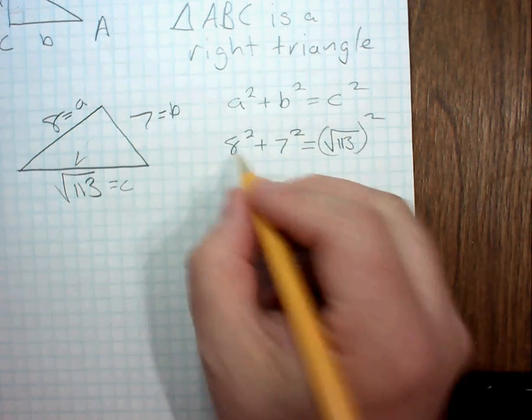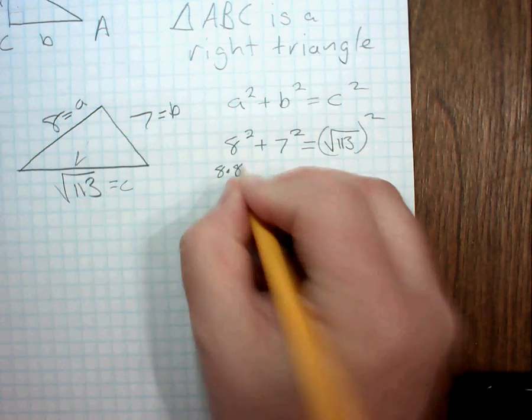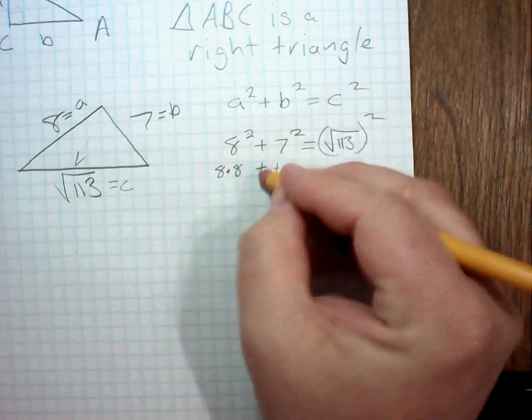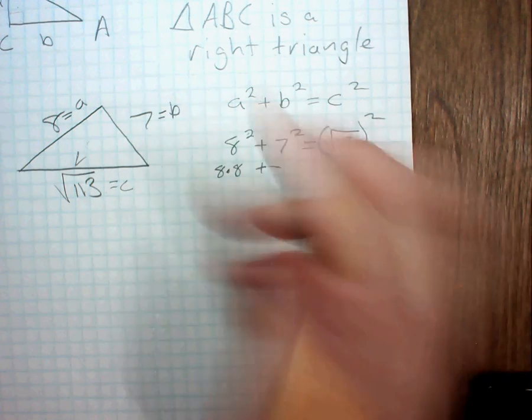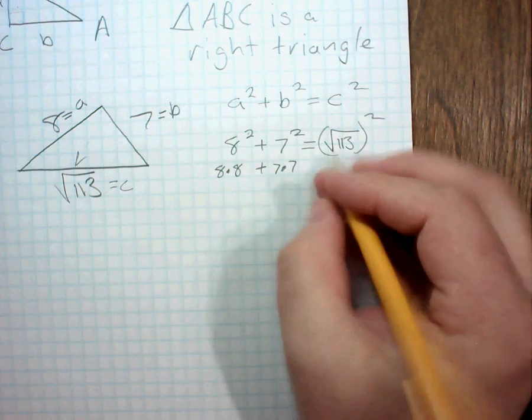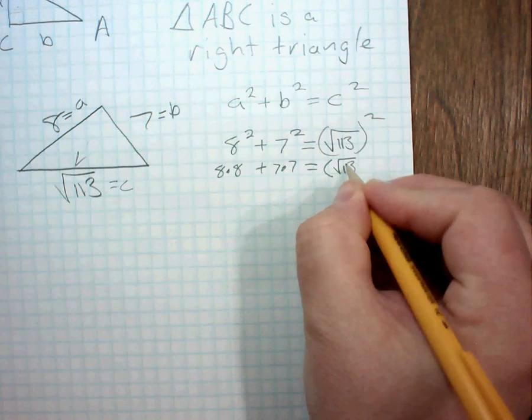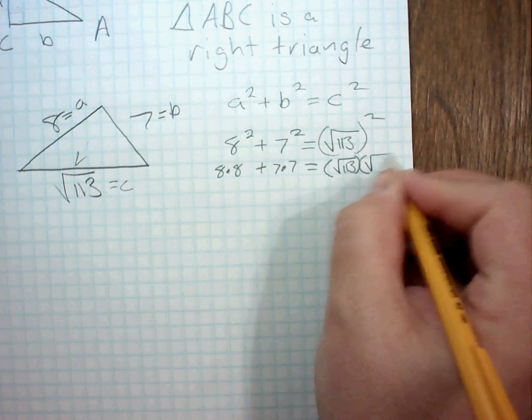All right, so 8 squared is 8 times 8. I'm going to write this out, because just in case, some of my students don't remember their squares and square roots. This would be 7 times 7, and then this would be the square root of 113 times the square root of 113.